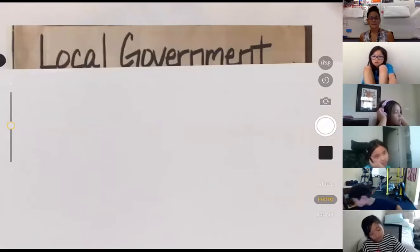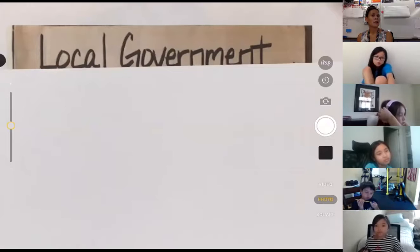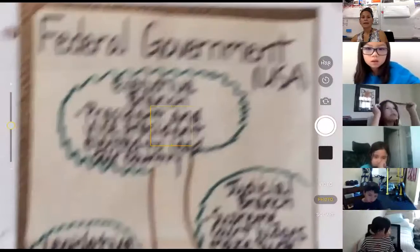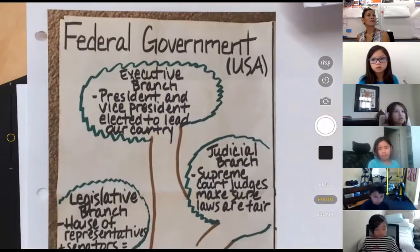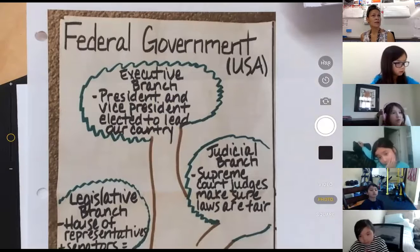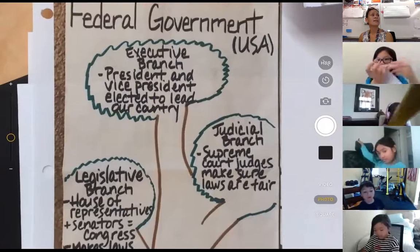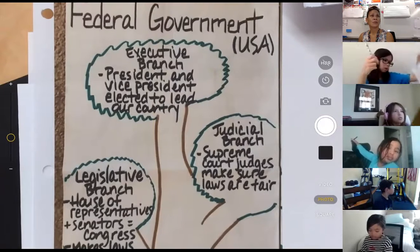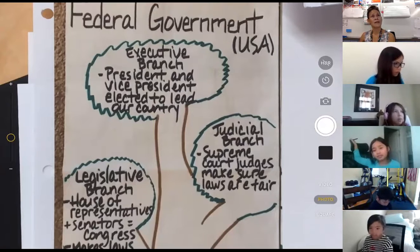All right, everyone. So again, yesterday we were talking about the federal branches of government. For your reference, here they are, and they also are on my website. In the federal government in the United States, we have the executive branch, which is the president and vice president, elected to lead our country. We have the legislative branch, which is the House of Representatives and the senators — together they make Congress. And we have the judicial branch, which at the federal level is the Supreme Court, and they make sure our laws are fair and enforced.